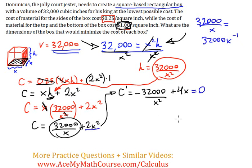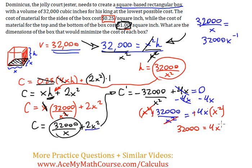To solve for x, subtract 4x from both sides: -32,000/x² = -4x. Multiply both sides by -1 and by x²: 32,000 = 4x³. Divide both sides by 4.